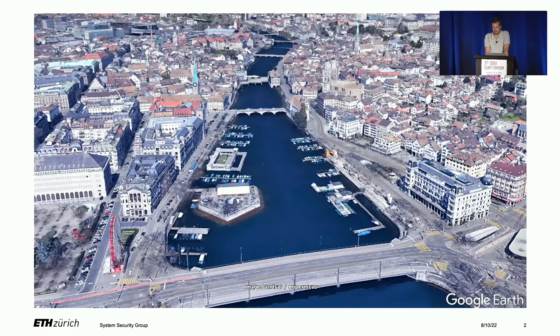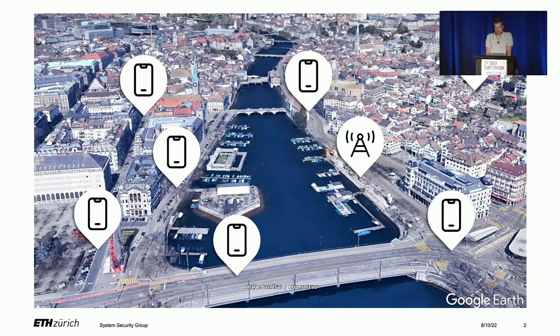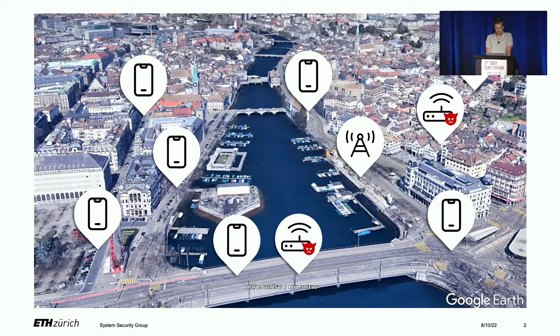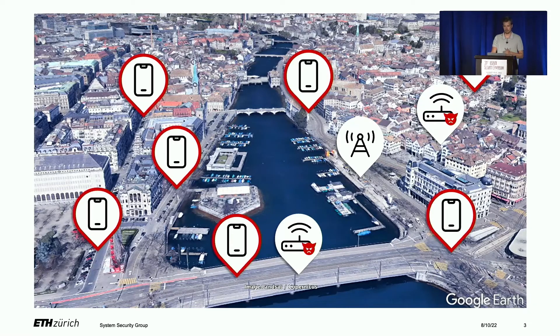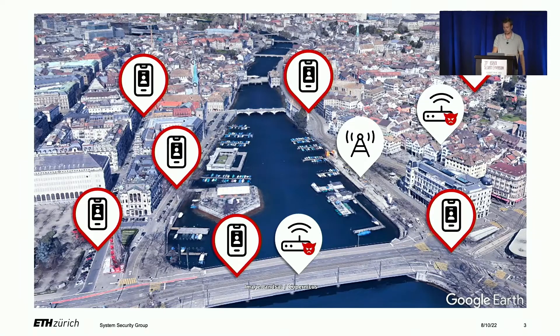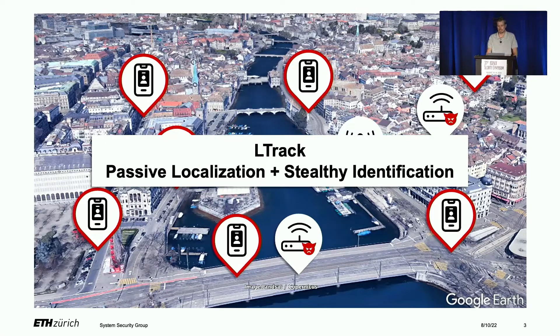In LTE networks, we have base stations and mobile phones connected to those base stations. In our work, we want to show how an attacker with a limited set of attacking devices can basically track all the users. What does an attacker need to track users? First, the location of all mobile phones, and secondly, the identity of those phones. L-Track does stealthy tracking using passive localization and stealthy identification.